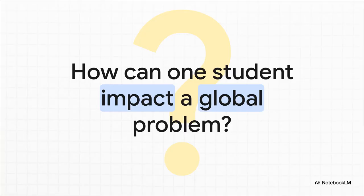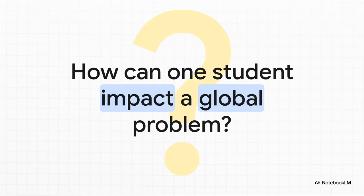How on earth can one student with not a lot of resources actually make a dent in a problem that massive? It sounds pretty much impossible, but with the right framework you can start to make the impossible feel a lot more manageable. So the answer is something called the MYP design cycle. The best way to think about it is like a roadmap for solving problems. It's not just about building stuff. It's a really structured way of thinking that guides you all the way from a fuzzy idea to a real tested solution. Let's see how it actually plays out.